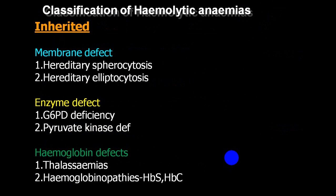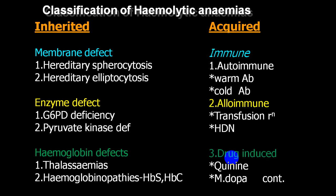A classification separating by defect type: membrane defects include spherocytosis and elliptocytosis; enzyme defects include G6PD deficiency and pyruvate kinase deficiency (PKD); hemoglobin defects include thalassemia and hemoglobinopathies like hemoglobin S or hemoglobin C. In the acquired group, immune causes may be autoimmune — warm antibody or cold antibody — or alloimmune varieties like transfusion reactions.